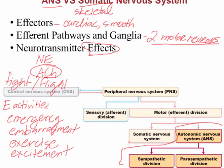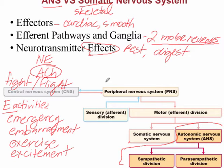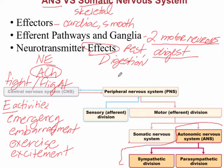The parasympathetic division is commonly referred to as the 'rest and digest' nervous system — activated when someone is relaxing. It's also called the 'D division.' The D activities include digestion (the digestive system is activated), defecation (the end part of digestion), and urination, also called diuresis. So the parasympathetic is the D division, and the sympathetic is the E division.